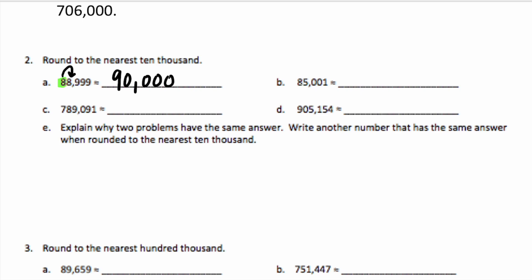For letter B, I have 80,000 again, so this is between 80,000 and 90,000. This is more than 85,000, so I'm going to round up to 90,000. For C, we have 780,000 — the 100,000 is unbundled into thousands. So this is between 780,000 and 790,000. This is more than 785,000, so I round up to 790,000.